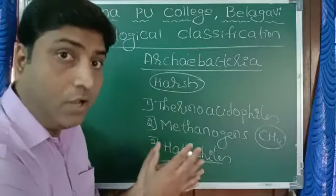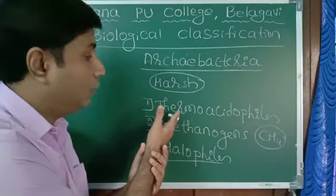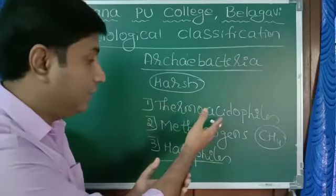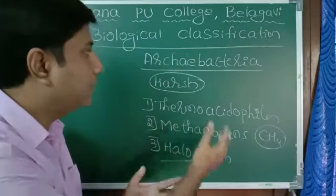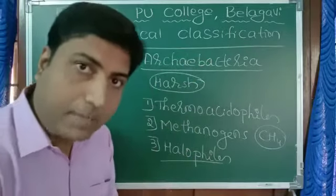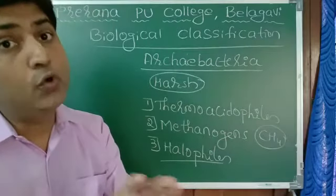These type of bacteria which live in very harsh condition - like in very high temperature, in acidic condition, in marshy area, and in saline condition - these kind of bacteria come under Archaebacteria. Whereas the other bacteria are called as true bacteria.